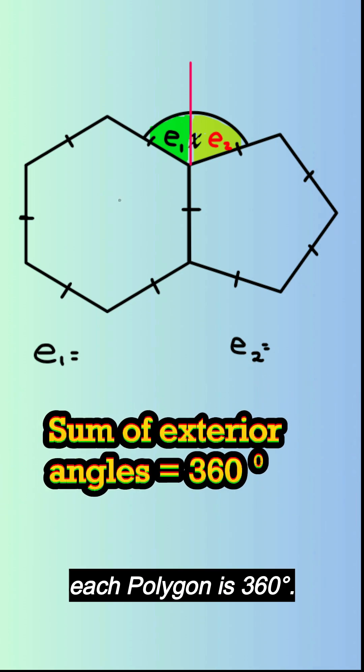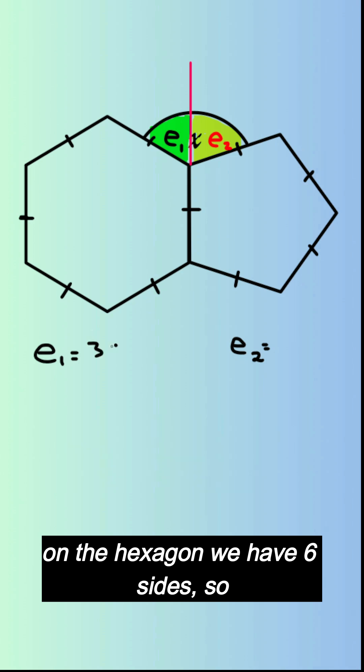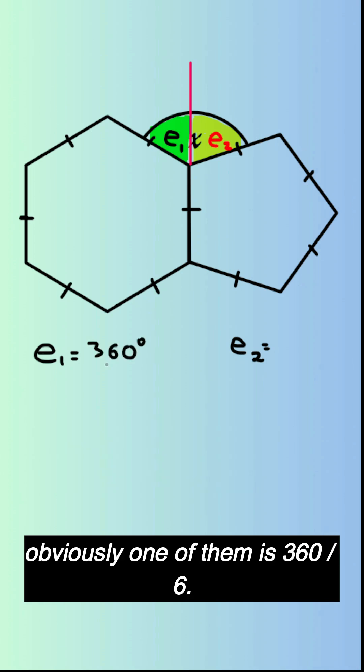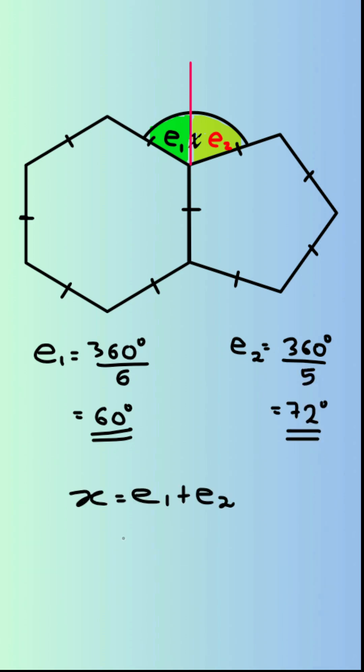But on the hexagon we have six sides, so obviously one of them is 360 divided by 6. For the pentagon it's 360 divided by 5, which is 72. Now we know clearly x is the sum of e1 and e2.